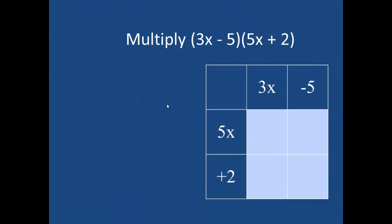I actually could have done this using any of the three methods. If I had decided to distribute first, I would do 3x times 5x. That's the same as the first terms, and it's also the first two items I would multiply in my box. Next in distributing would be 3x times 2. That's the outer terms, and I would get 6x.